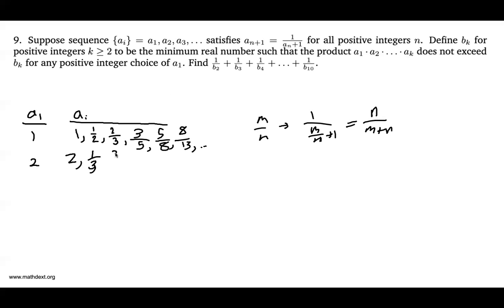Then using this sort of pattern, we can get our third term equal to, well, numerator becomes the denominator. The denominator becomes the sum of 3 and 1, 3 fourths, 4 sevenths, 7 elevenths, 11 eighteenths, et cetera, et cetera.